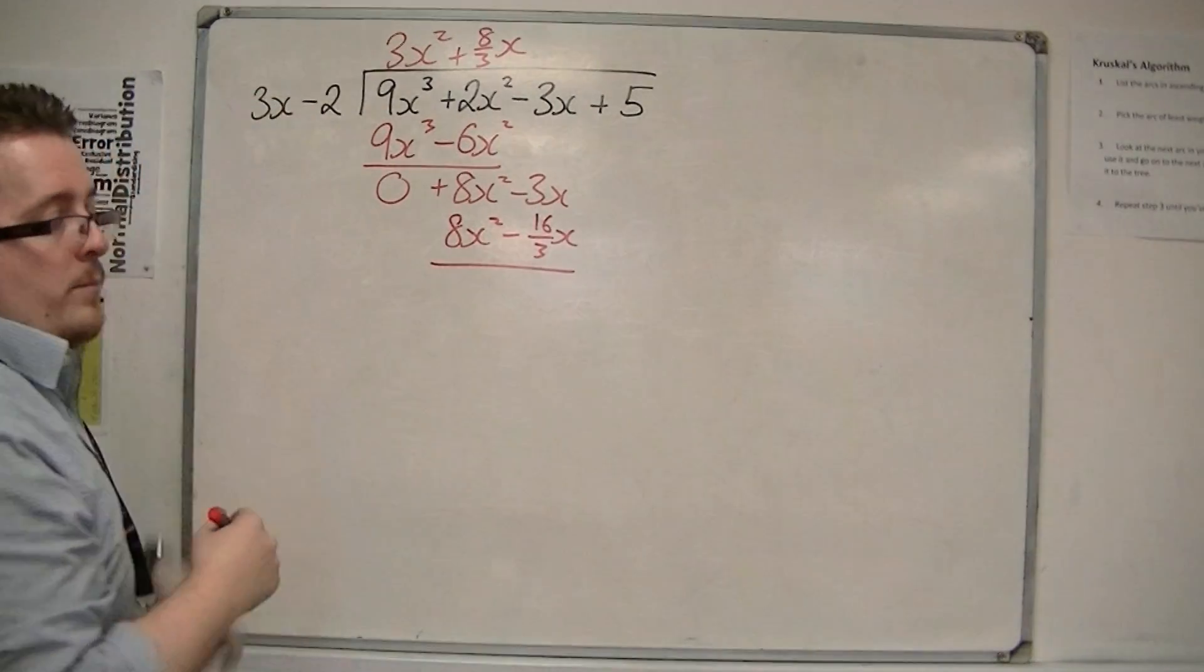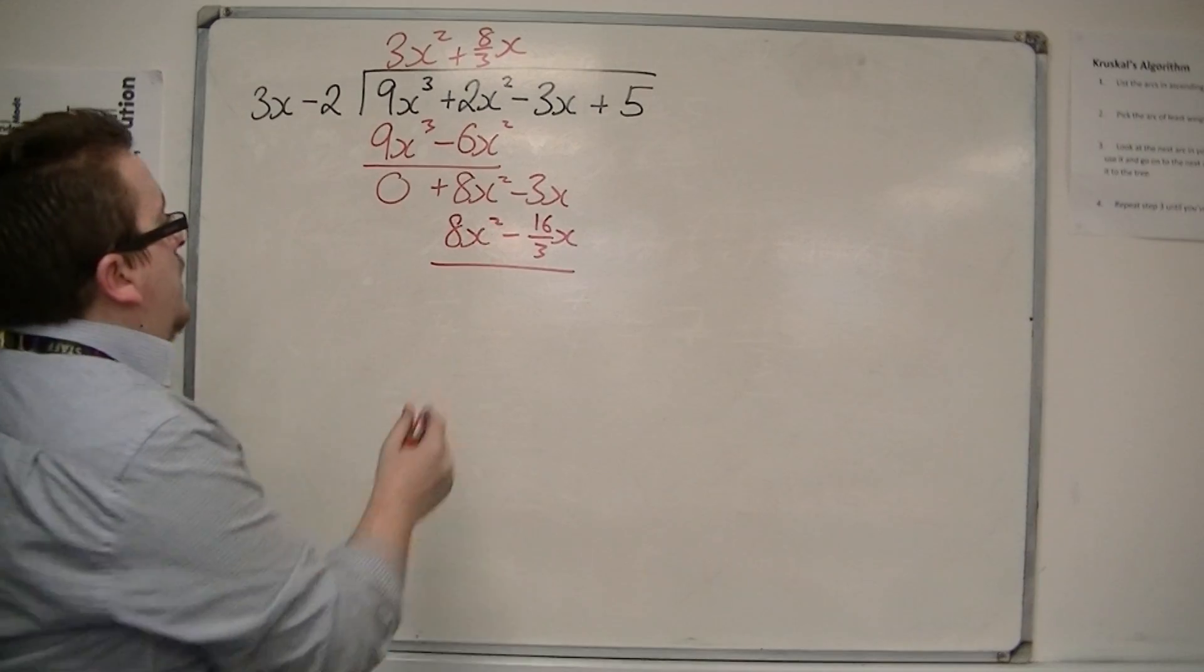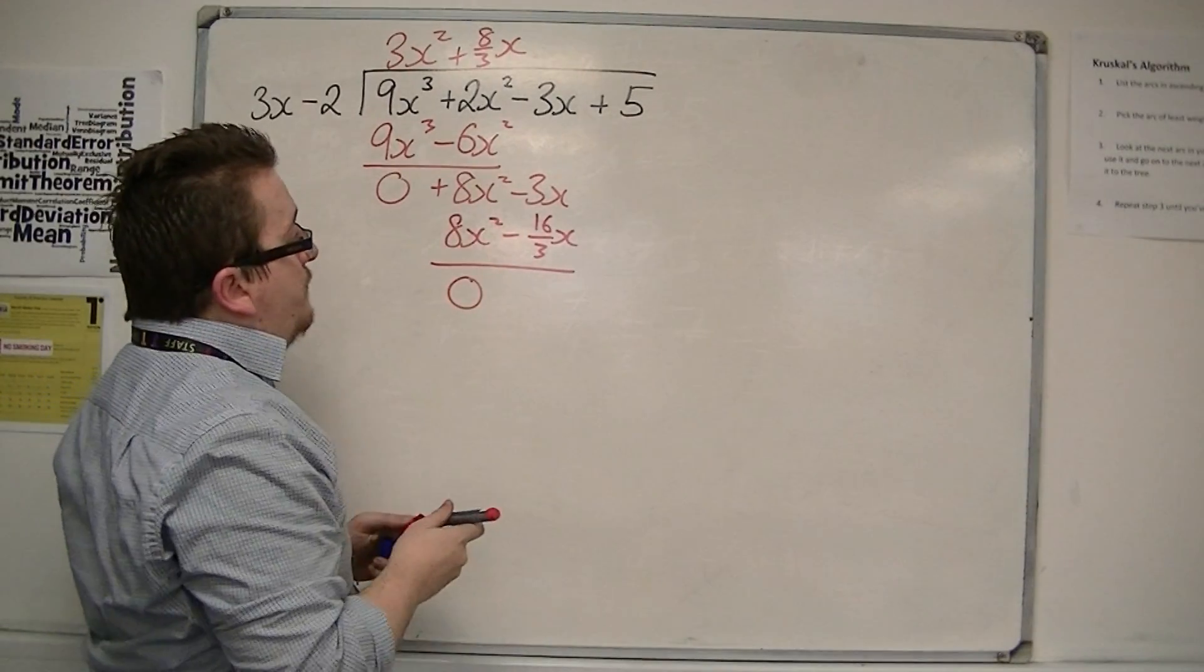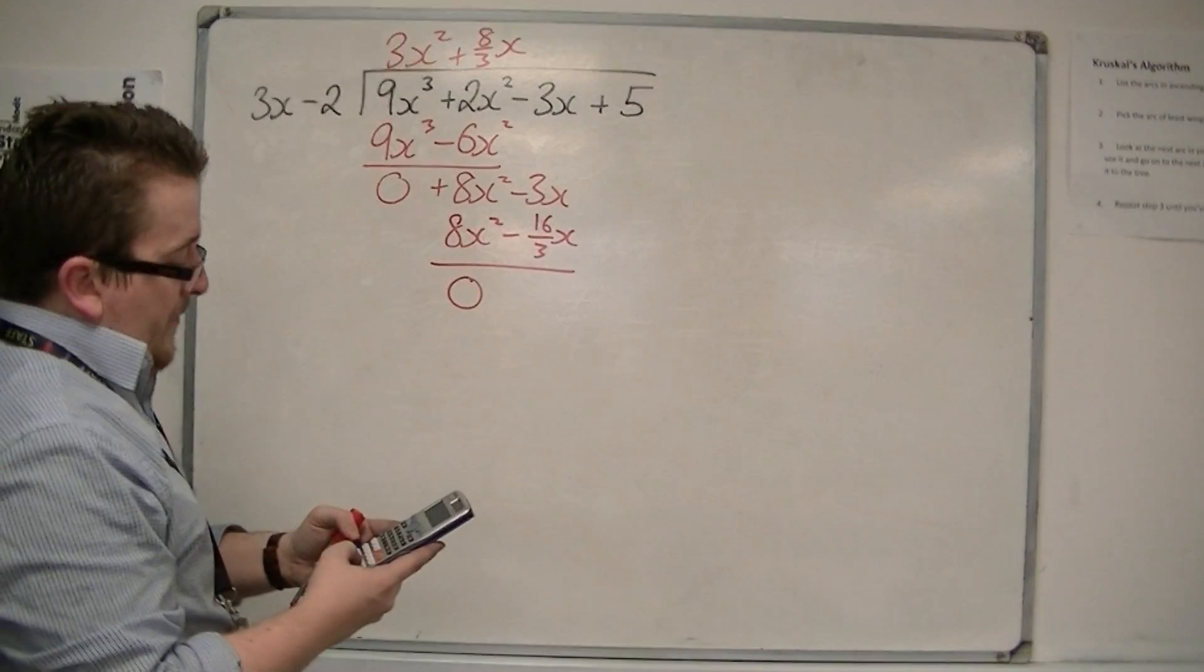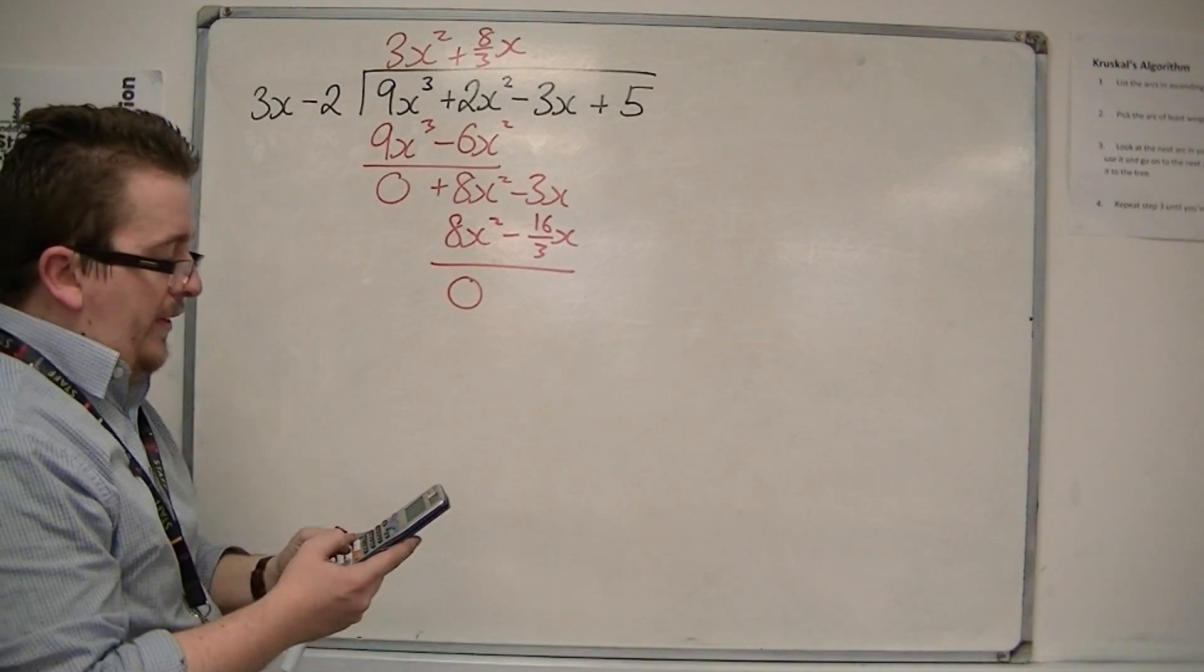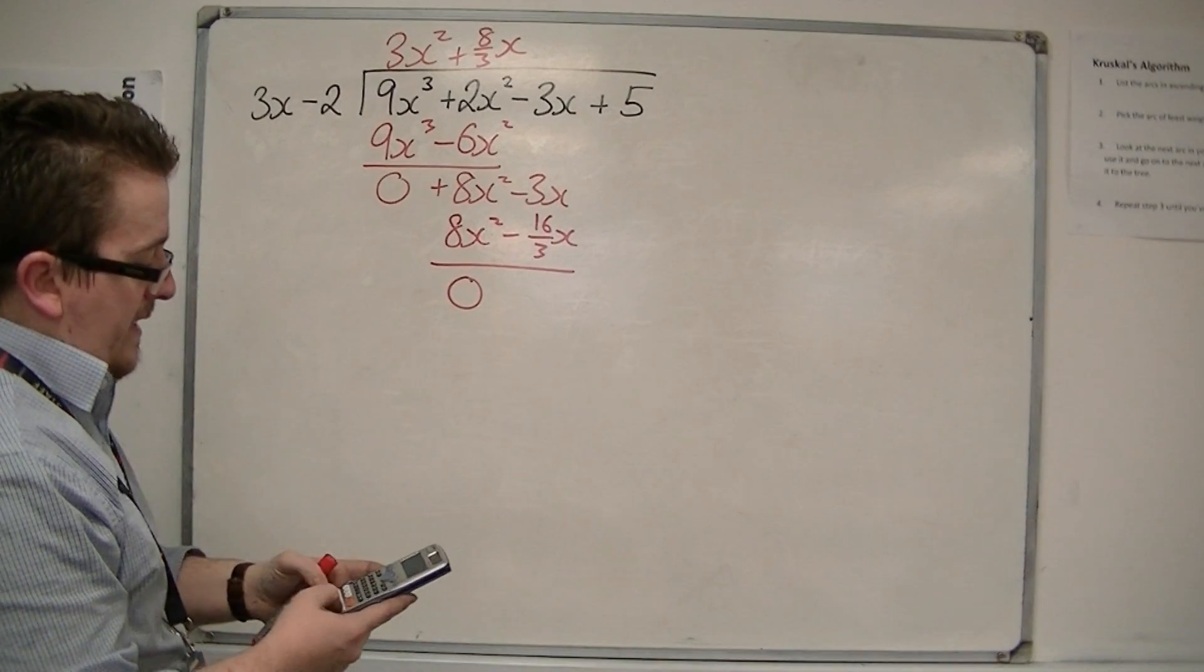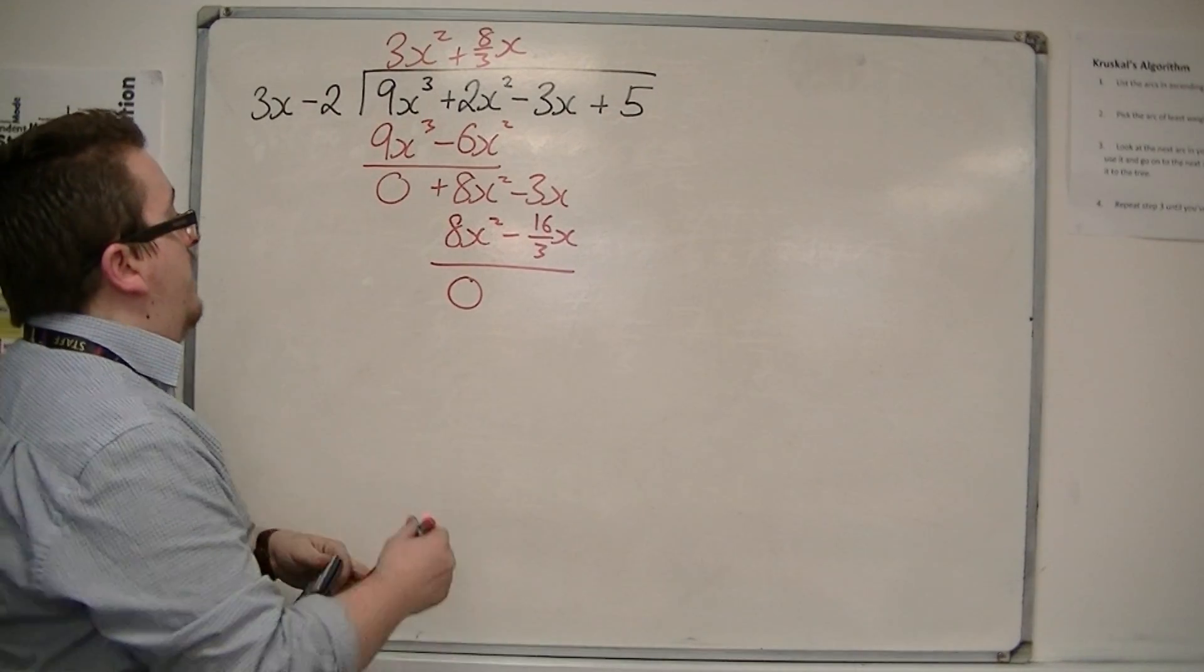Draw a line, perform a subtraction. So I get 0 there. Now I'm going to have to bring in my calculator. We've got minus 3 take away minus 16 thirds, so plus 16 thirds, which is 7 thirds.